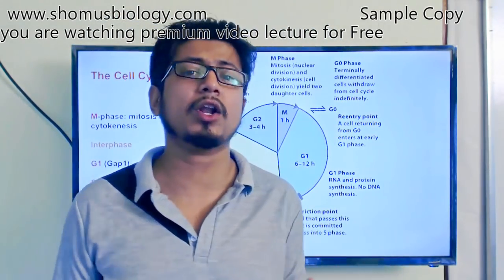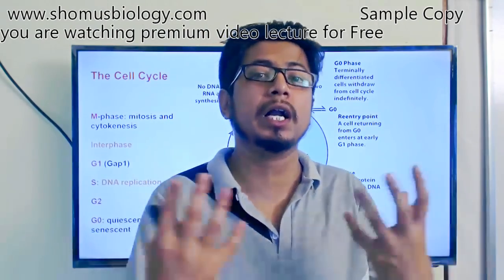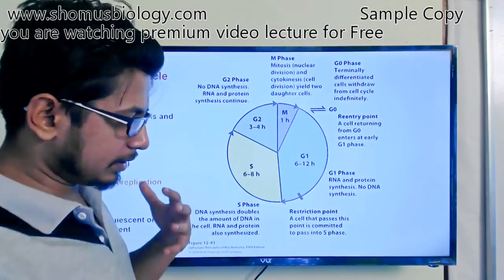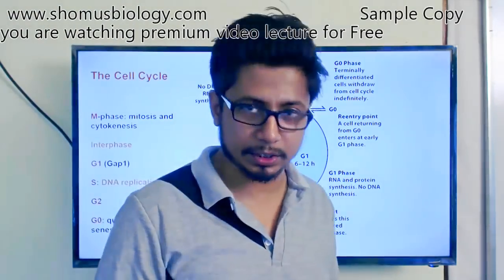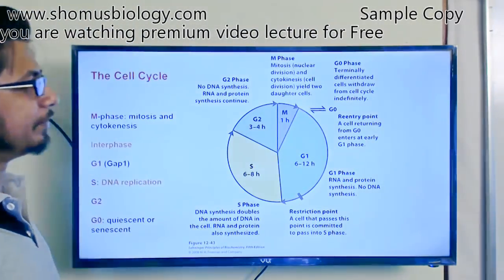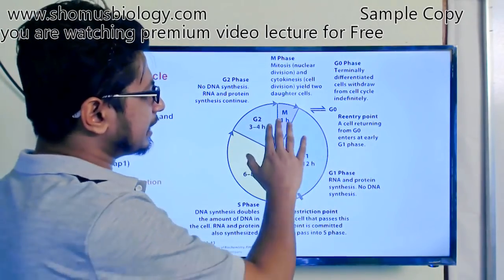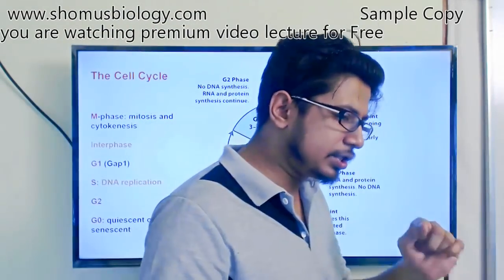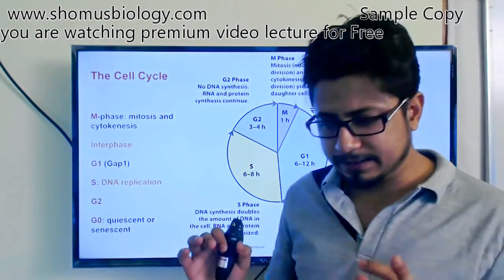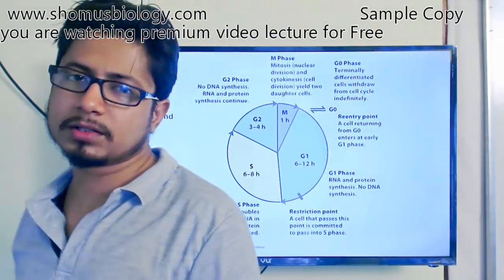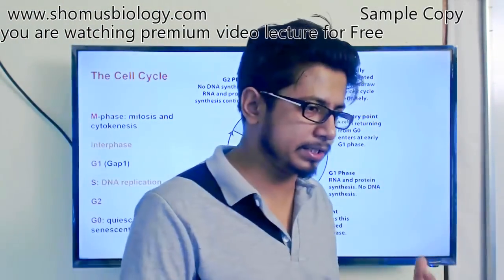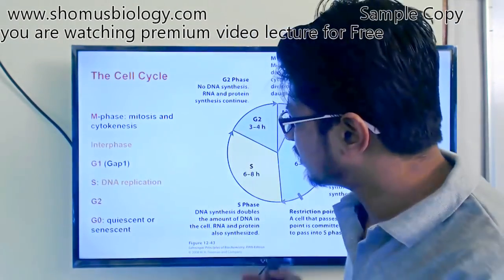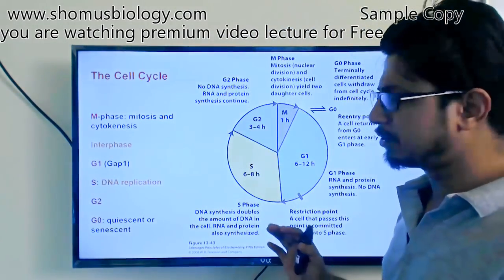Cells need proteins built up and produced before M phase can start. Right after M phase, the cell prepares itself for another round of division. If it encounters difficulty, many cells can shift to G0 state and remain there for a while. Some cells always remain in G0 — the dormant state — permanently.